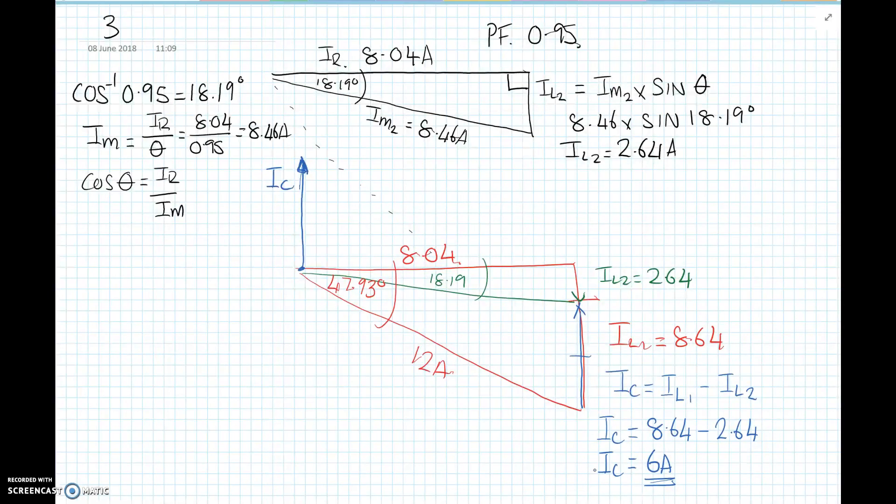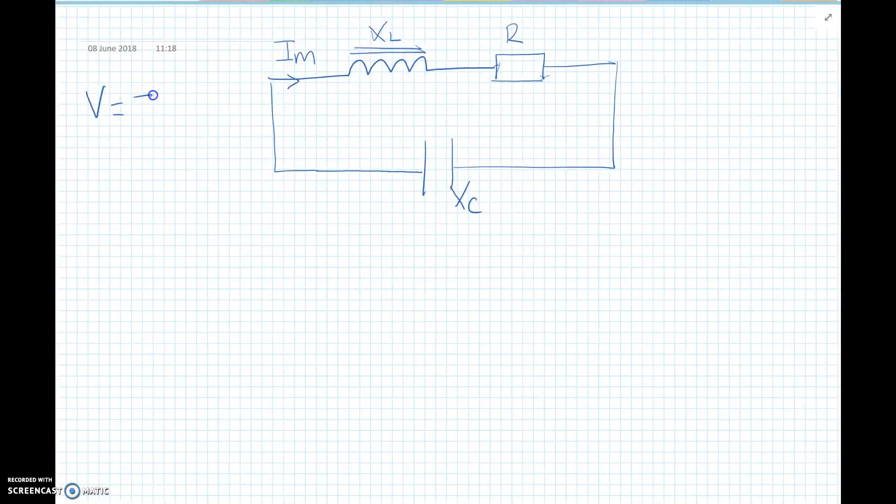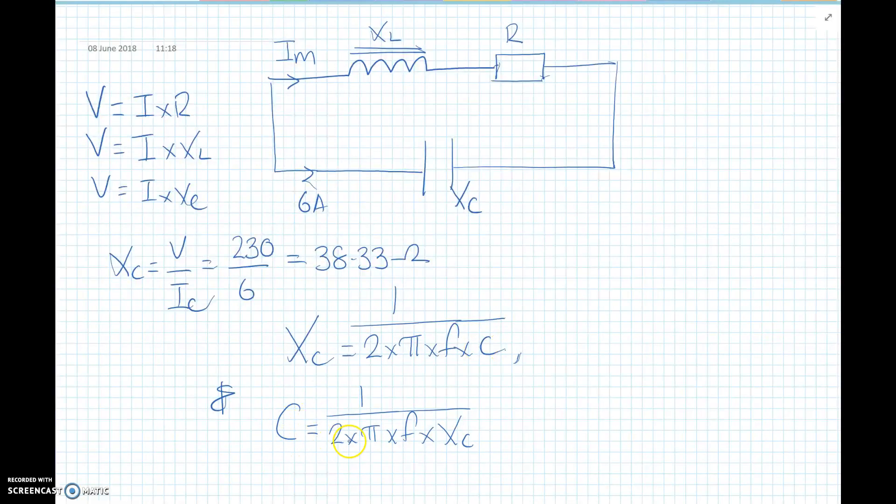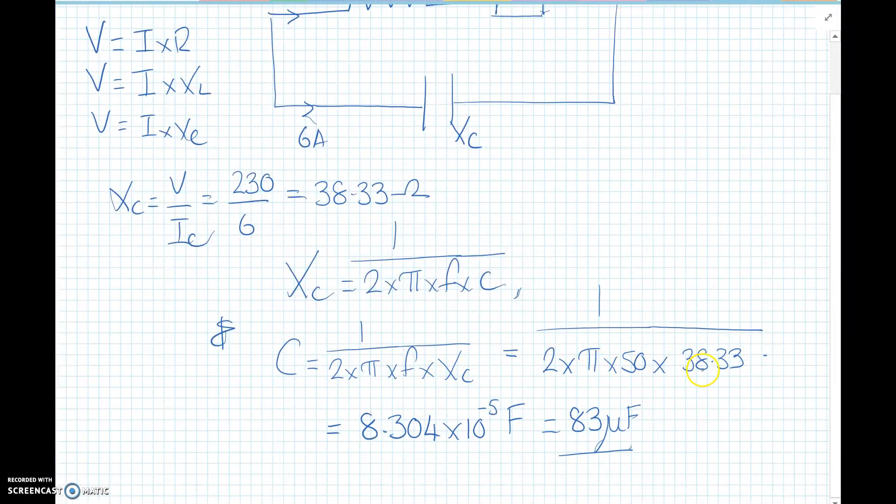So we need 6 amps to go through our capacitor, which takes off on the negative of the inductor, which leaves only 2.64 amps on the inductive circuit. So now we know the current required, we need to select the value of the capacitor. From Ohm's law, V equals I times R, and in AC theory V is I times XL and V is I times XC. We need 6 amps to flow through our capacitor. So we transpose the formula, XC is V over IC, which is going to be 230 over 6, which gives us 38.33 ohms. Capacitive reactance XC is 2πFC. Rearrange that for C, so C equals 1 over 2 times pi times frequency times reactance. So we've got 1 over 2 times pi, 50 hertz, the reactance is 38.33, which gives us 83 microfarads.